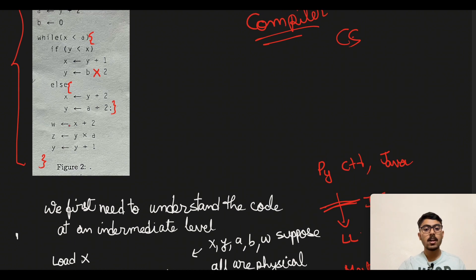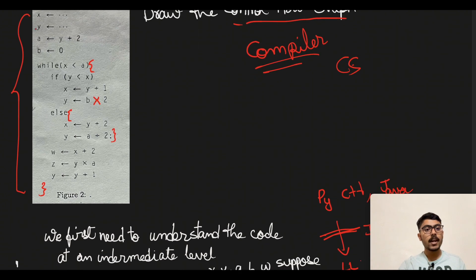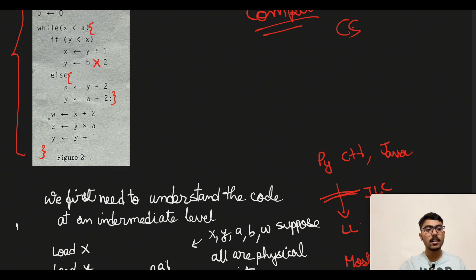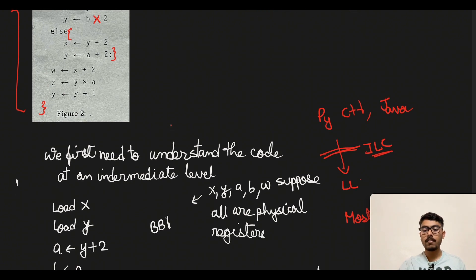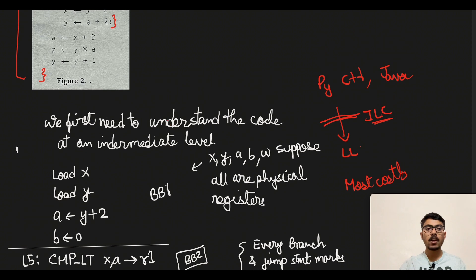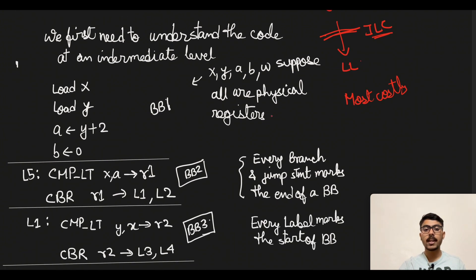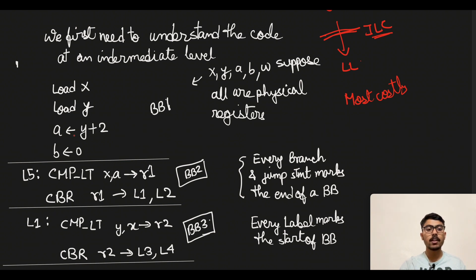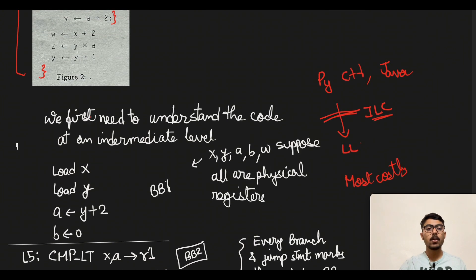We have variables x, y, a, b, w, and z to store. We take all the variables and put them into specific physical registers. First we load x — that is, a memory location is transferred to x — then we load y, then we load the value of y plus 2 into a, then we load 0 into b.